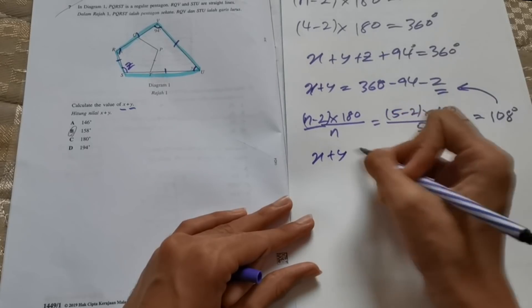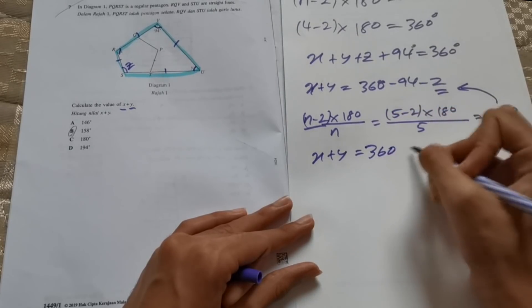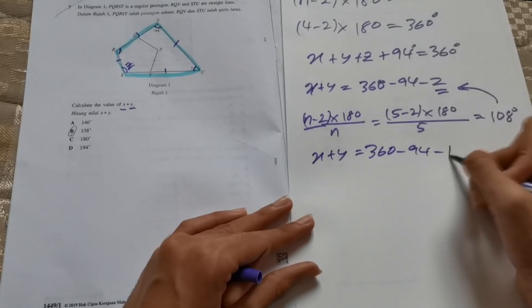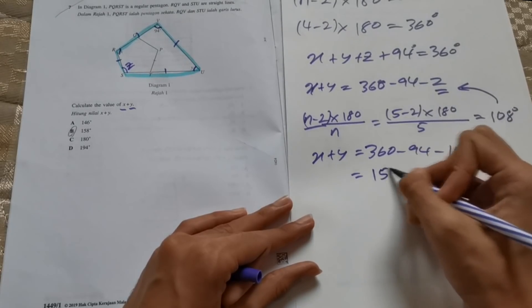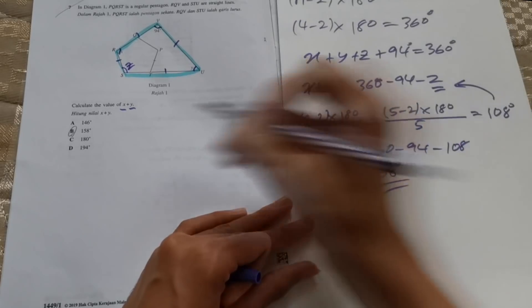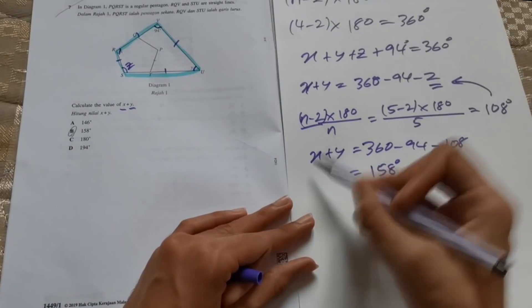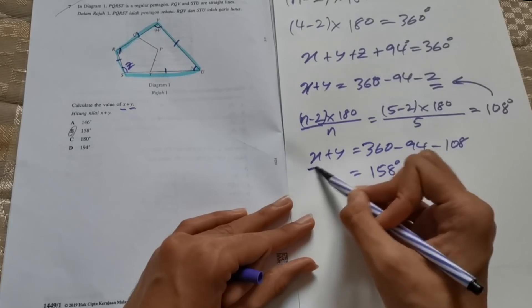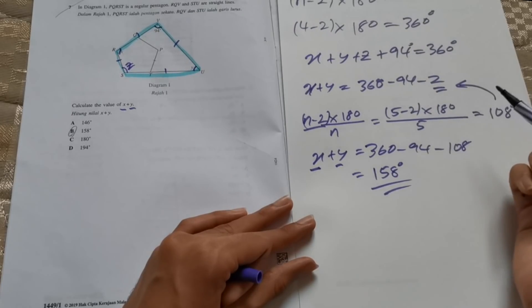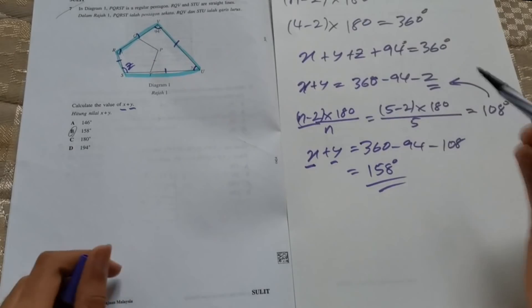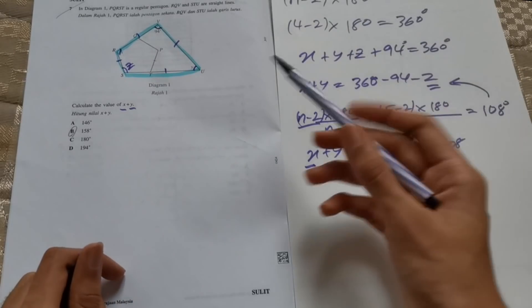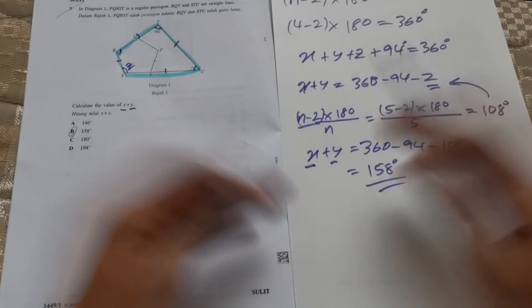Now we substitute this into the equation again. We'll get x plus y equals to 360 minus 94 minus 108. And if you use the calculator to solve this, you'll get 158 degrees, which is b. So as you can see, you do not need to find the specific values of x and y. Do it simple.